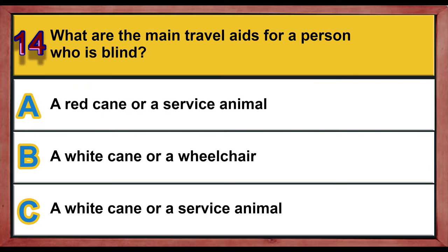Question 14. What are the main travel aids for a person who is blind? A. A red cane or a service animal. B. A white cane or a wheelchair. C. A white cane or a service animal.